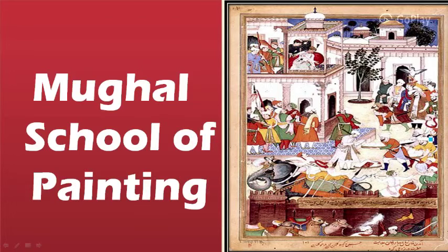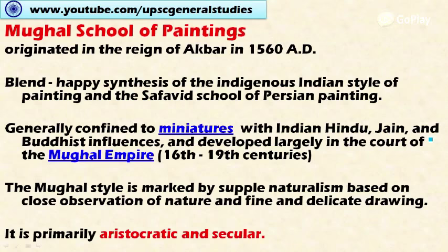Welcome friends. In this video let's discuss the Mughal school of painting. Mughal school of painting was originated in the reign of Akbar in 1560 AD, even though it was started by Humayun in 1550 AD. It was a very short period and most of the development took place under Akbar's reign. This Mughal school of painting is a happy synthesis of Indian indigenous style of painting and the Safavid school of Persian painting from present-day Iran.